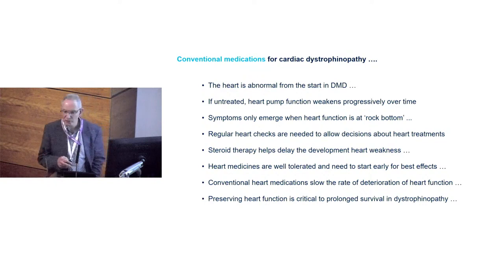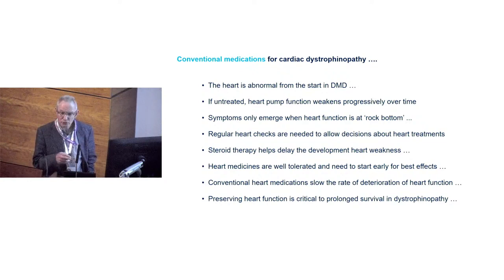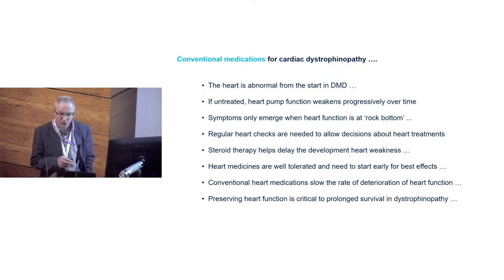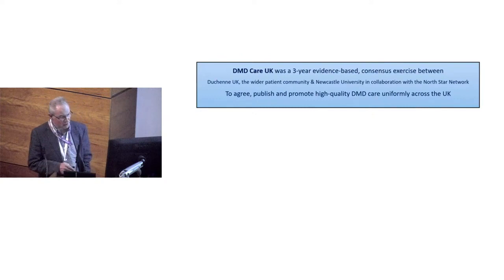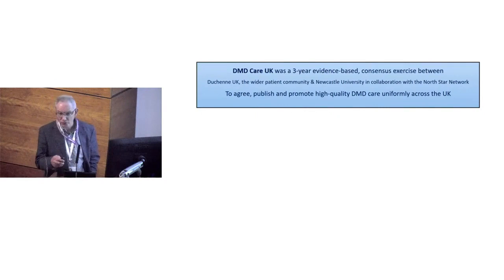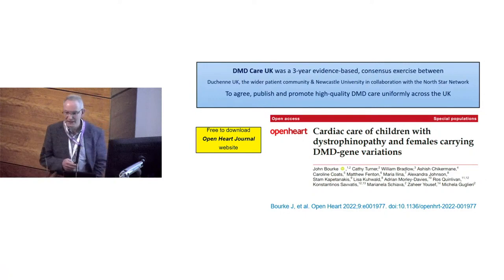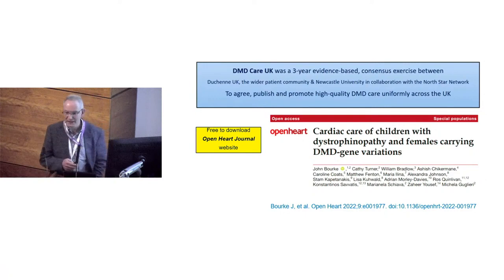Interestingly, steroid therapy — probably by reducing inflammation — is beneficial for the heart also in Duchenne, unlike in other cardiomyopathies. Conventional heart medicines are well tolerated and can be used in combination. They do slow, but don't prevent, progressive decline in heart function. The key reason you want to do this is that cardiac dysfunction determines an increasing proportion of the longevity of patients with Duchenne. I was chair of a working group that reviewed all the evidence for conventional cardiac treatments — just published and freely available to download.